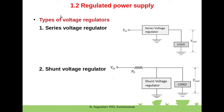Next we will see different types of voltage regulators. A regulated power supply is classified into two types: the series voltage regulator and the shunt (parallel) voltage regulator. In a series voltage regulator, the regulating element is in series with the load. In a shunt or parallel voltage regulator, the regulating element is connected in parallel with the load.